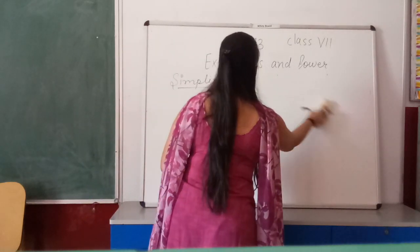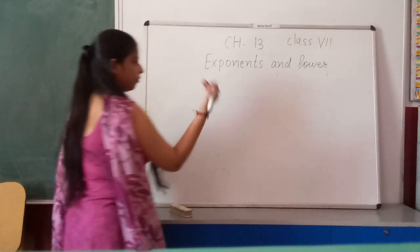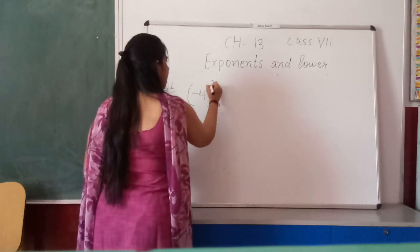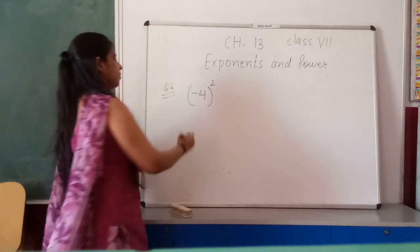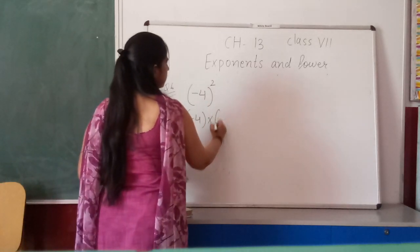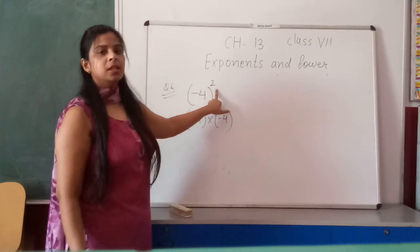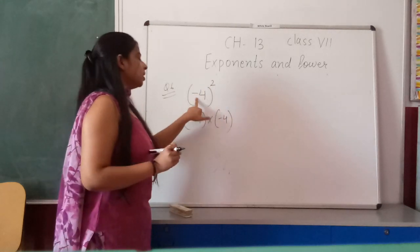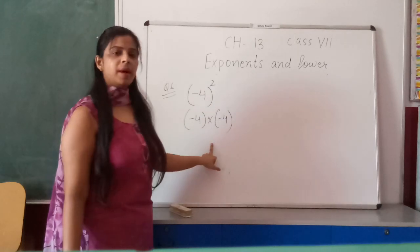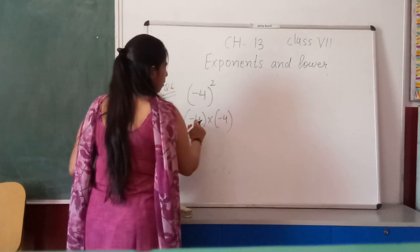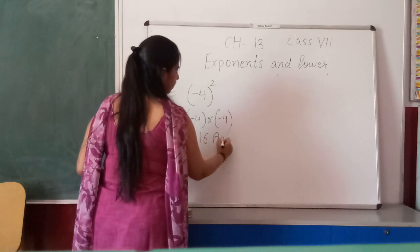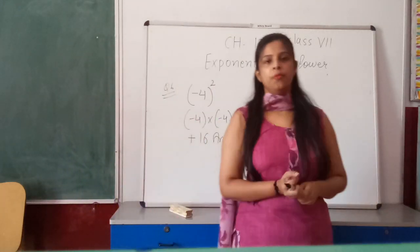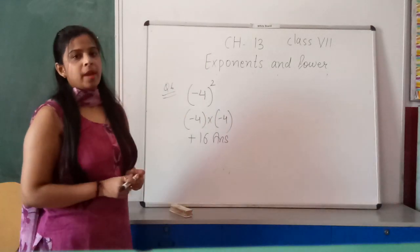Question number 6: simplify (−4)². We can write (−4) × (−4). Here the power is even, and a negative times a negative gives a positive result. So (−4)² = +16. This completes Exercise 13.1.